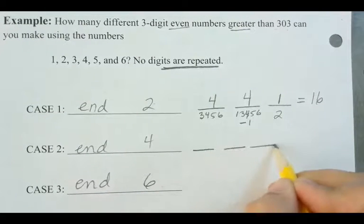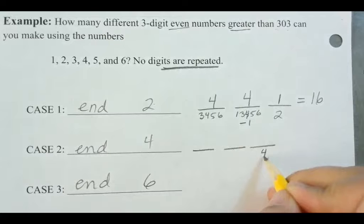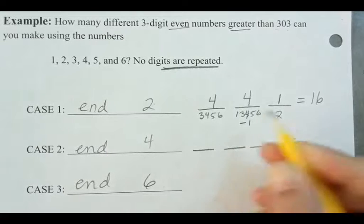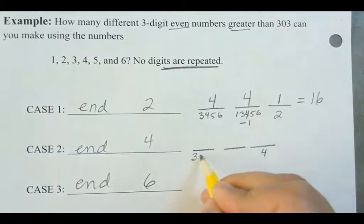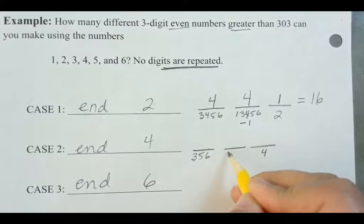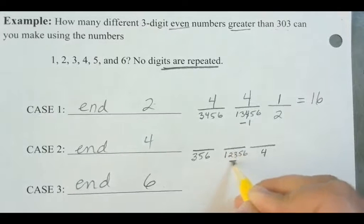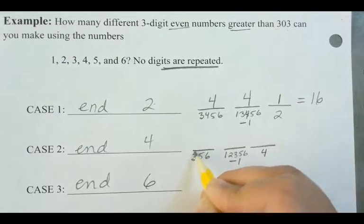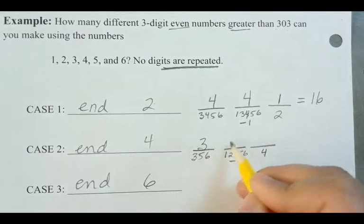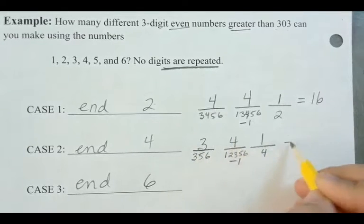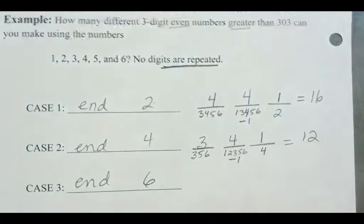Okay. And then here, same idea. So what if I put a 4 here? I can choose a 3. I can't put a 4 here anymore, but I can use a 5 and a 6. And for this middle spot, I can do a 1, a 2, a 3, a 5, and a 6, minus one of those because I've used it for the first one. So I've got three choices, four choices, and one choice. So that's a total of 12 choices.